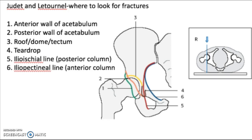You'll have the Judet views of the acetabulum that we're going to look at today. These are the lines that Judet and Letourneau look at where there may possibly be fractures. You can see the posterior wall of the acetabulum here and the anterior wall of the acetabulum here, and the dome — also called the roof or tectum — which is the top part of the acetabulum.